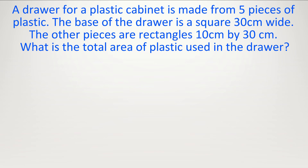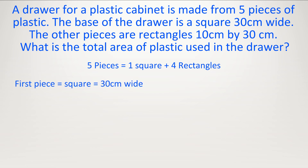A drawer for a plastic cabinet is made from 5 pieces of plastic. The base of the drawer is a square 30 centimeters wide. The other pieces are rectangles 10 centimeters high and 30 centimeters long. What is the total area of plastic used in the drawer? You don't have to picture it because you know there are 5 pieces and they've given you each piece. The first piece is a square 30 centimeters wide — it's a square so length equals width, so 30 times 30 equals 900 centimeters squared.